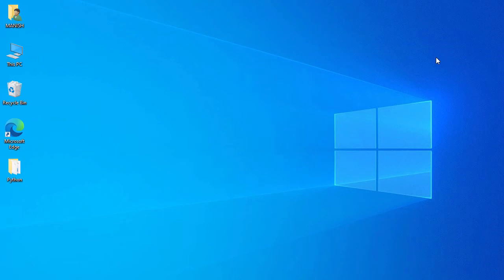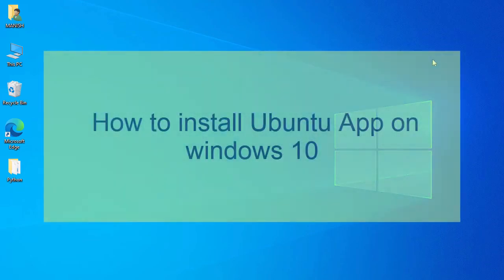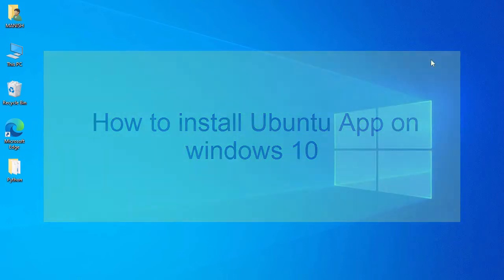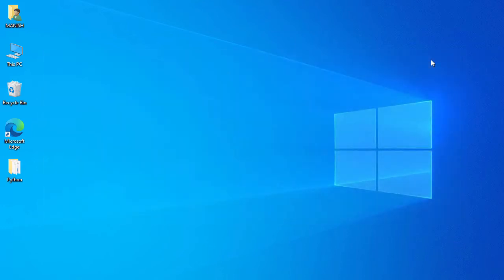In this video we'll look at how to install the Ubuntu app on Windows 10. This process is divided into two stages: in the first stage we'll apply some Windows configuration changes, and in the next stage we'll install the Ubuntu app on Windows 10.